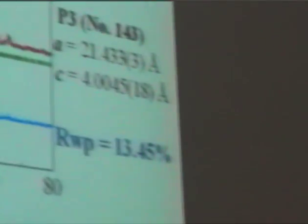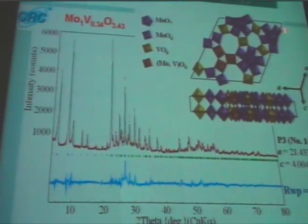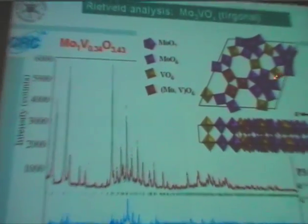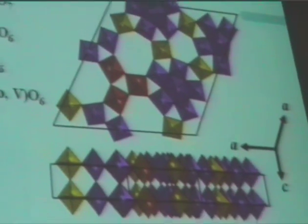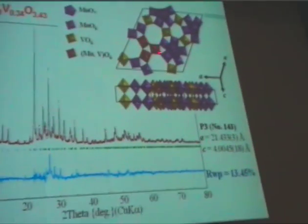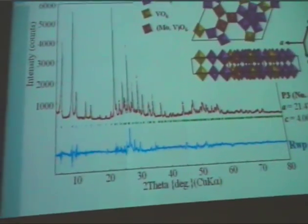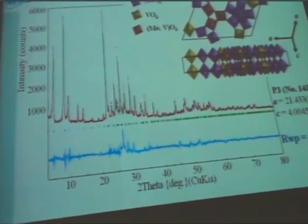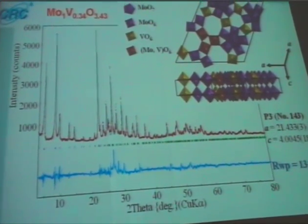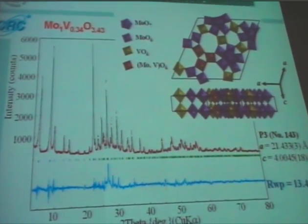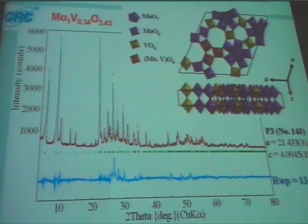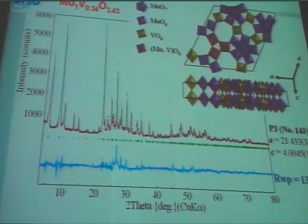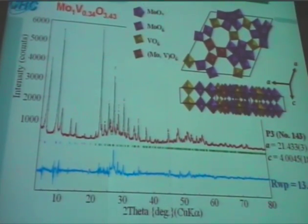Using this same methodology for constructing material for another phase — here again, pentagonal units connected together with three vanadium atoms, forming these units — and then one layer together with the molybdenum units in there. Then we can conduct the Rietveld analysis, and as you can see, the agreement is excellent. So based on both samples' analysis, you can say that this material has the same structural arrangement.